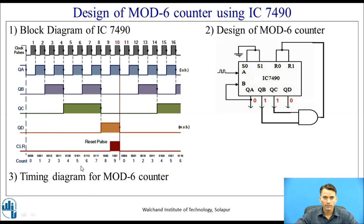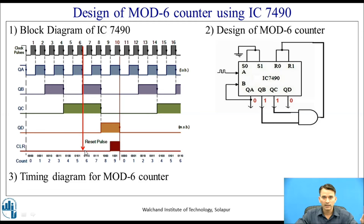In the waveform for the mod-6 counter, the counter counts from 0 to 5. When the 6th clock comes, it gets reset. You can see the output 0000 representing decimal 0 at the start. When at the 5th clock the output is 0101, representing 5, and when the 6th clock comes the counter is reset and starts counting from 0 again.